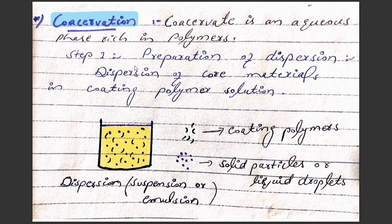Hello friends, assalamu alaikum. Today we will discuss another method for the preparation of microencapsules. The name of the method is the coacervation method. So what is coacervation? Coacervation is a process in which polymers are separated from the solvent.